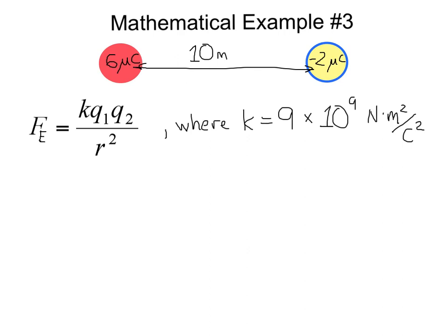So let's calculate this. So the electric force will be equal to K, which is 9 times 10 to the 9th newton meters squared per coulombs squared, times Q1, which is 6 microcoulombs. But remember, we need to convert that into coulombs. And since a microcoulomb is 10 to the minus 6 coulombs, that makes this 6 times 10 to the minus 6 coulombs.